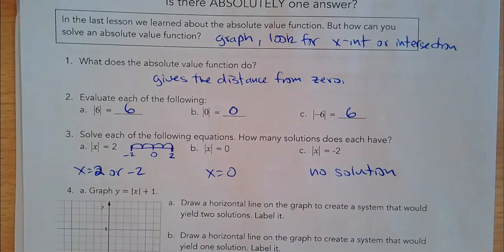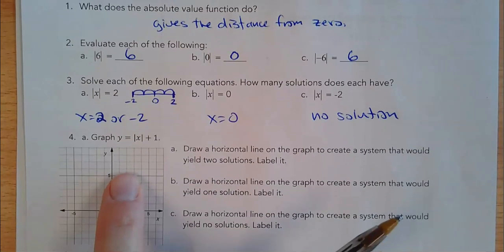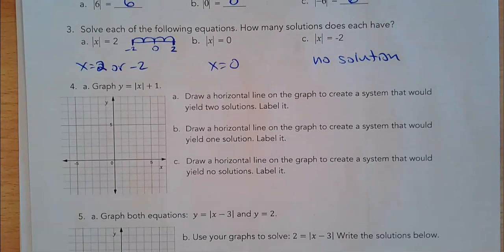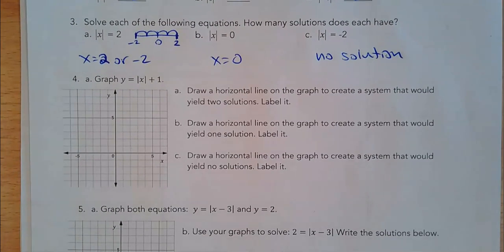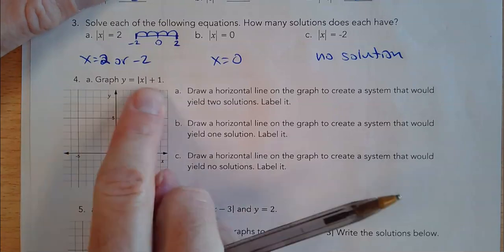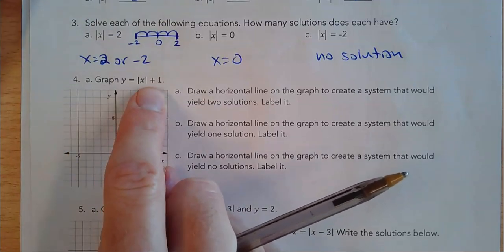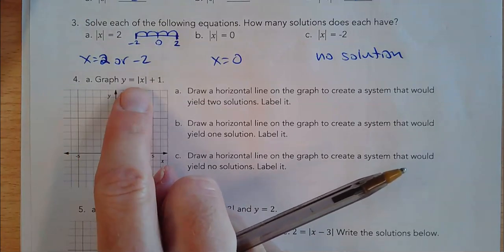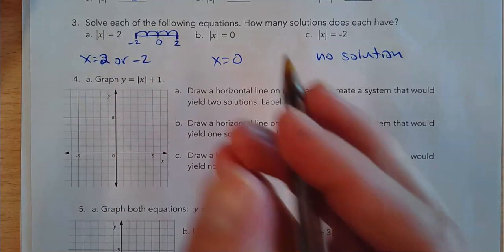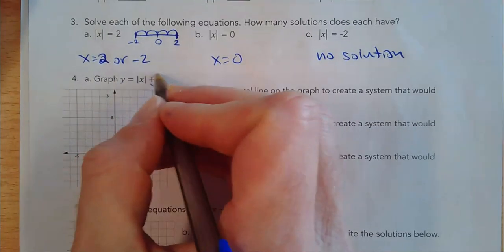So one way to solve this is by graphing. This is helpful if you have a graph or technology available, but it's not the primary way we want you to solve it. From yesterday, we graph y equals the absolute value of x plus 1. Now what does that plus 1 do to the graph?